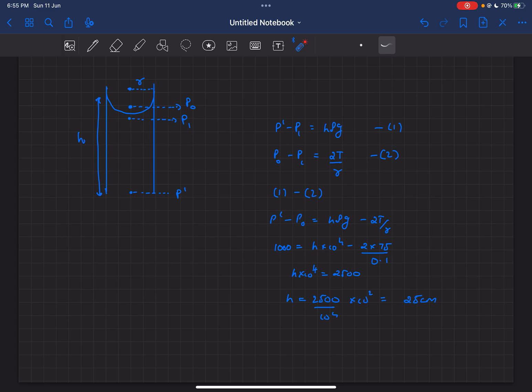This also means the radius of curvature of the meniscus would be same as the radius of this tube. So we can write the difference in pressures, p dash minus p1, as h rho g because that pressure difference arises due to the weight of the fluid.